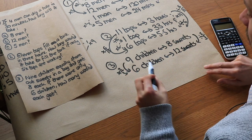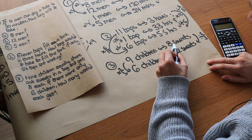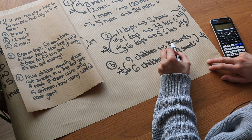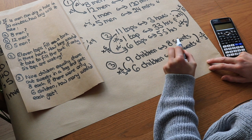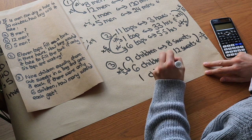Or you could have done the unitary method. So if 9 children each get 8 sweets, then if you had 1 child, that's 9 times less children, so it would be 9 times as many sweets. So it would be 8 times 9, which is 72. So if 1 child gets 72 sweets...